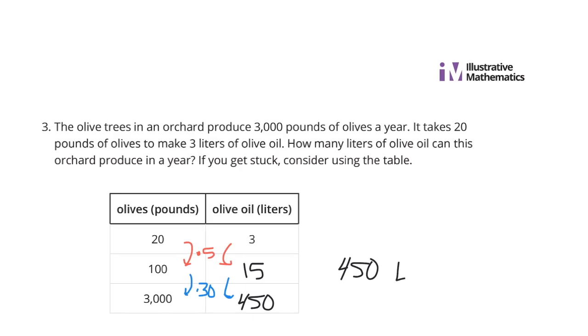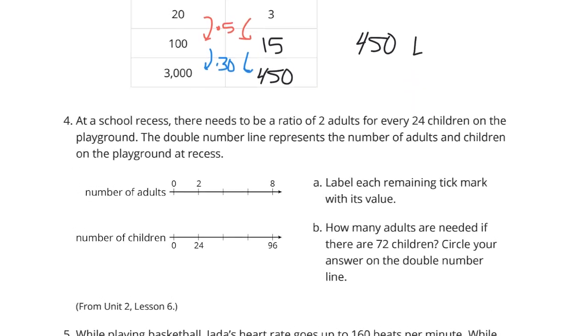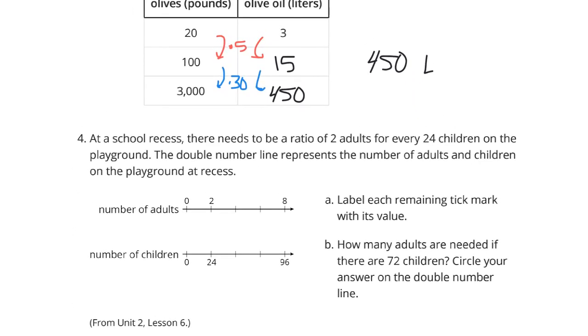Question 4. At school recess, there needs to be a ratio of 2 adults for every 24 children on the playground. The double number line represents the number of adults and children on the playground at recess. A. Label each remaining tick mark with its value.